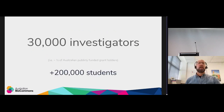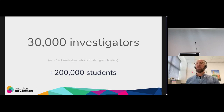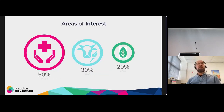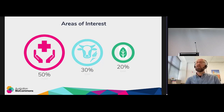To give an idea of the scale of life science research in Australia: about a third of Australian publicly funded grant holders are focused on the life sciences — that's around 30,000 PIs. Roughly half are focused on human health research, about 30% in agriculture, and 20% in environmental sciences.